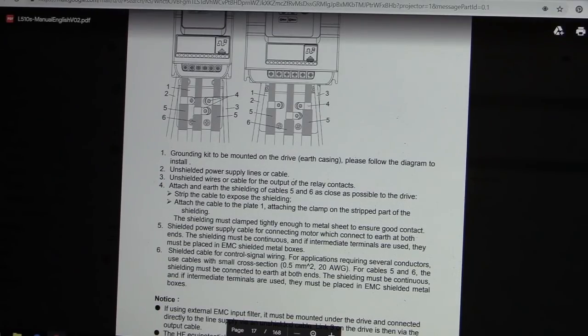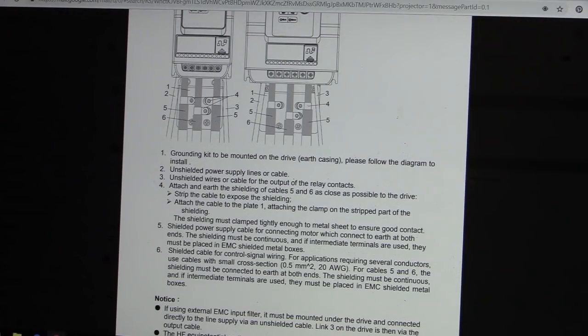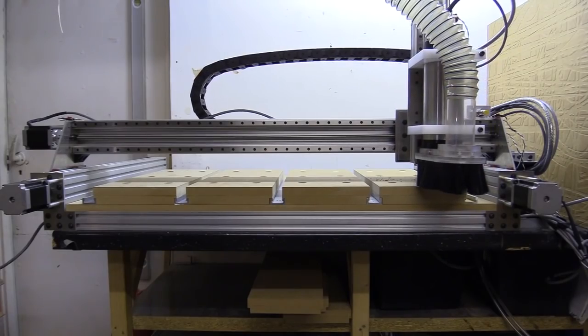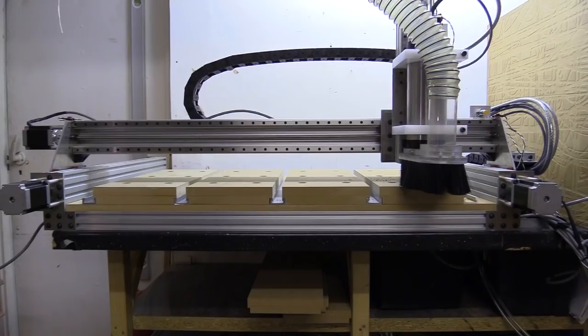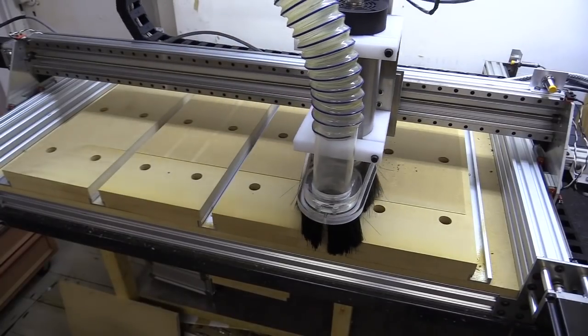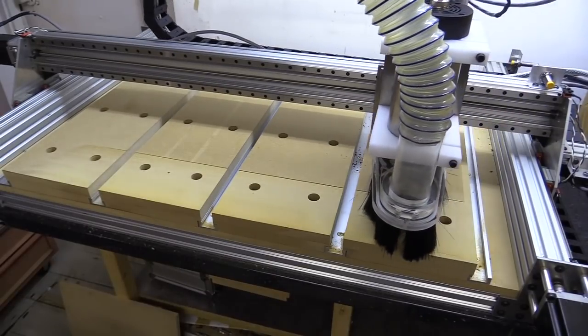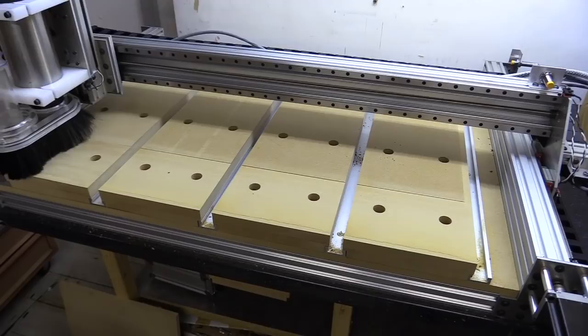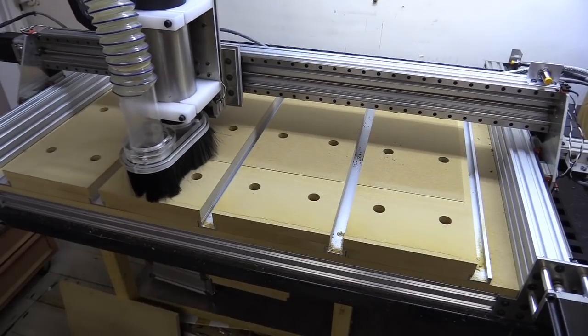For cables 5 and 6 shielding must be connected to earth at both ends. Shielding must be continuous. So that's essentially what I've learnt and the changes I've made to the electronics of the CNC machine and its controller. I've been cutting stuff out on and off now for several weeks and I've not noticed any unusual behaviour. So it seems the changes I've made to the controller have made a difference.